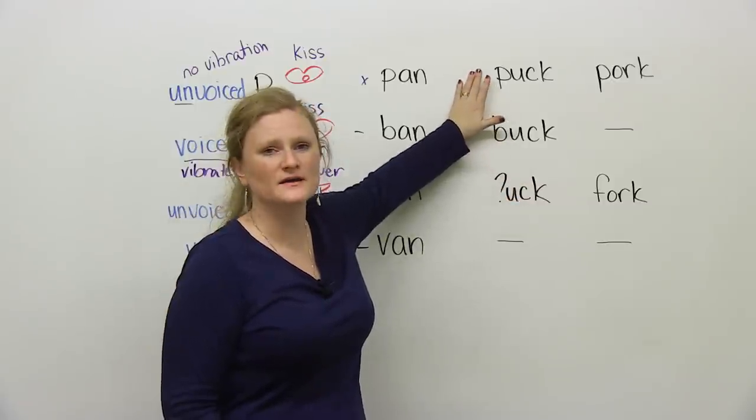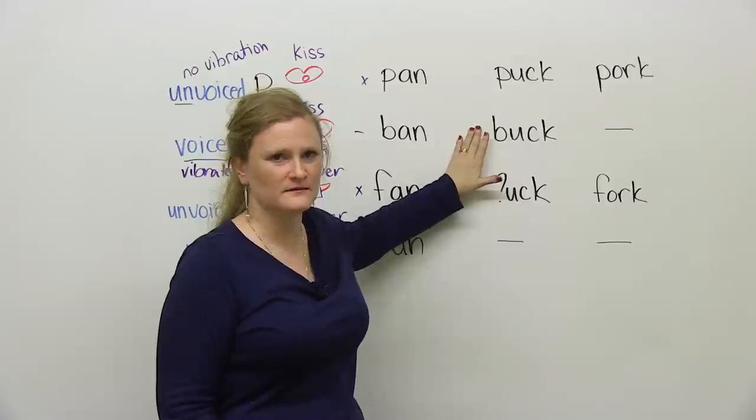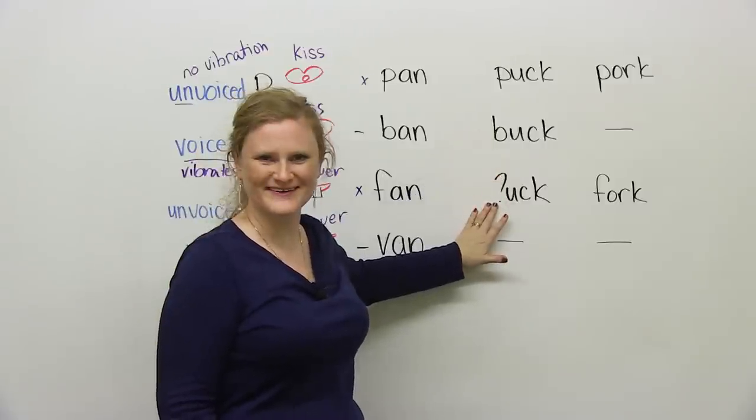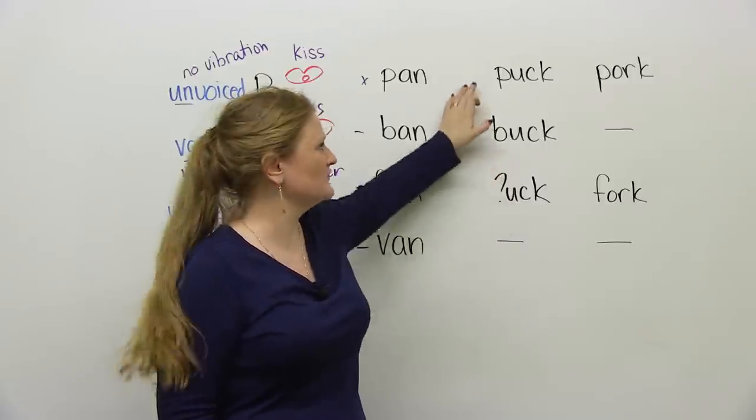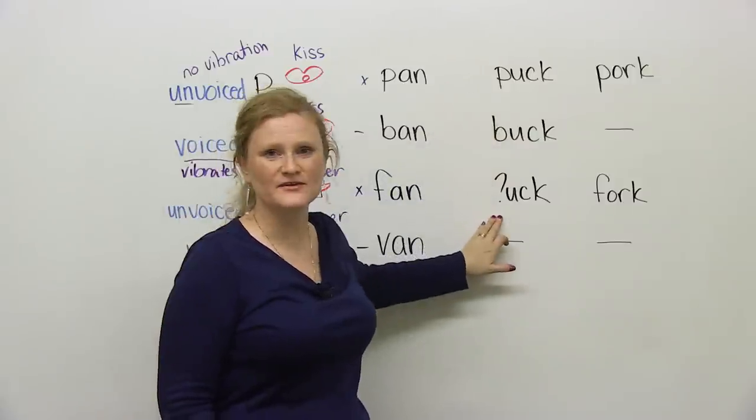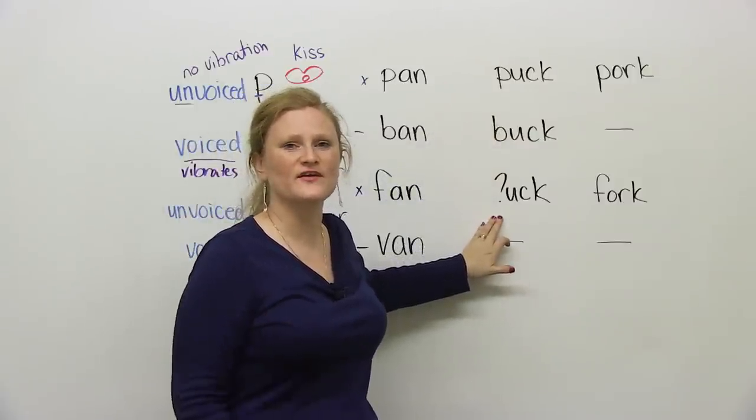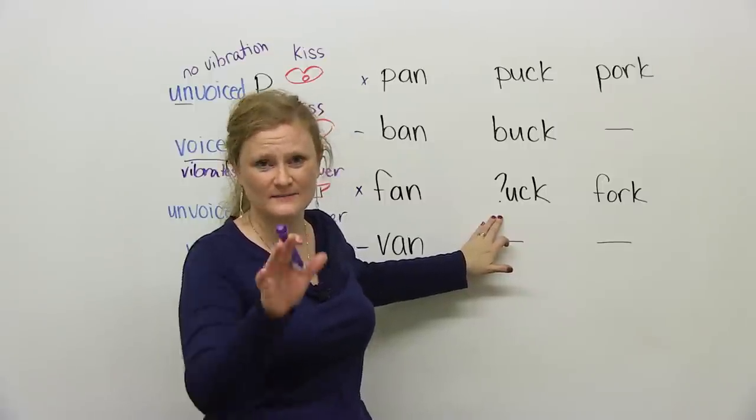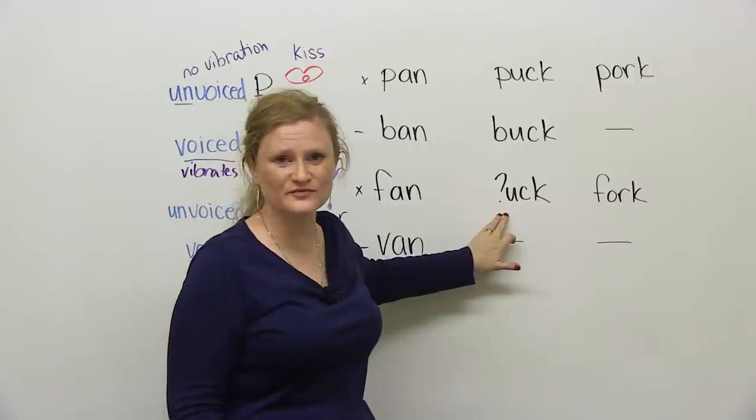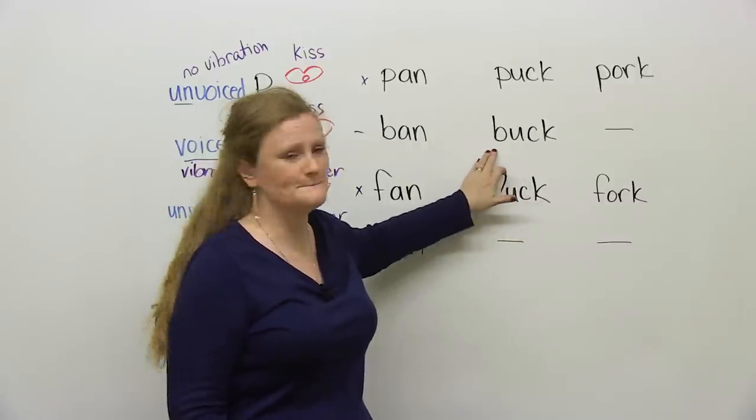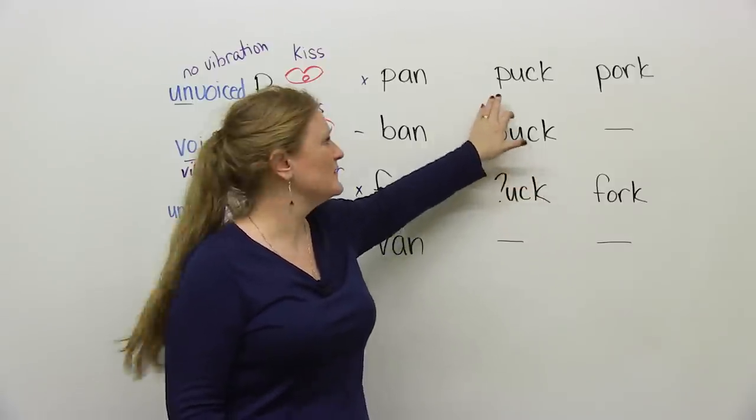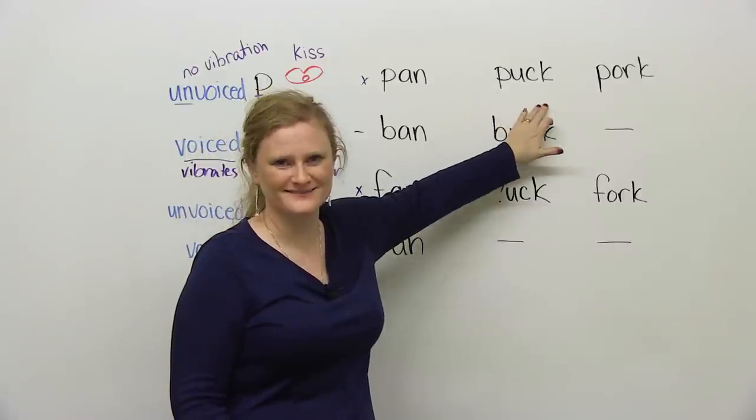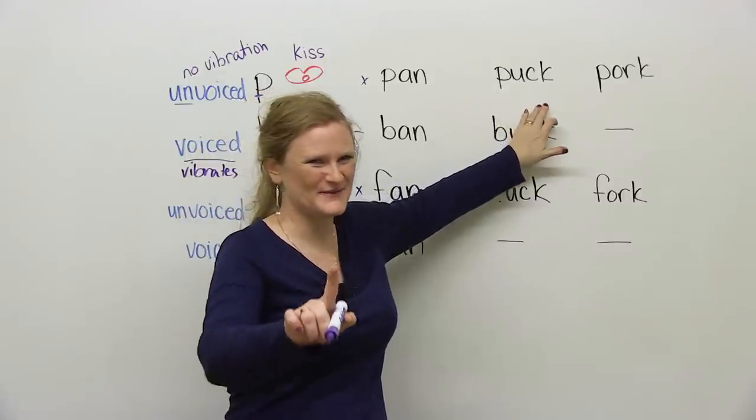The next one we have with the B sound is buck. Buck. So we have puck and buck. We have a word that rhymes with puck and buck, and it starts with an F. So you can say... uck. Try this: P-uck, B-uck, F-uck. Don't say a bad word.